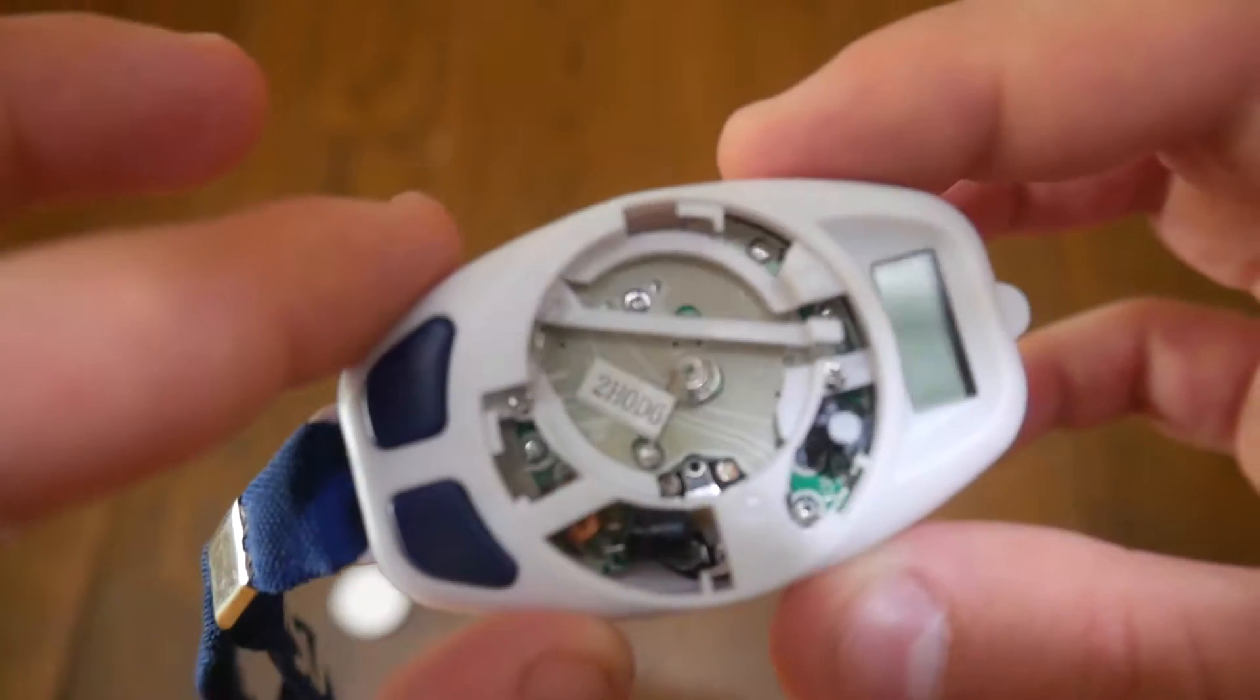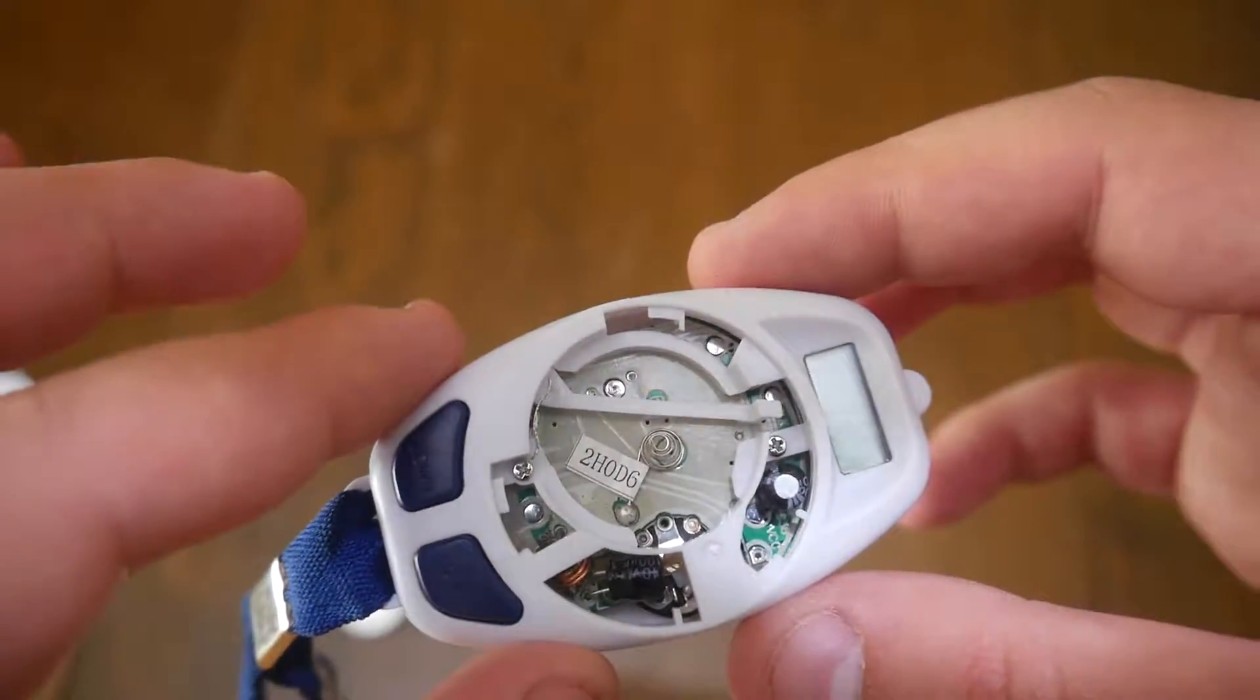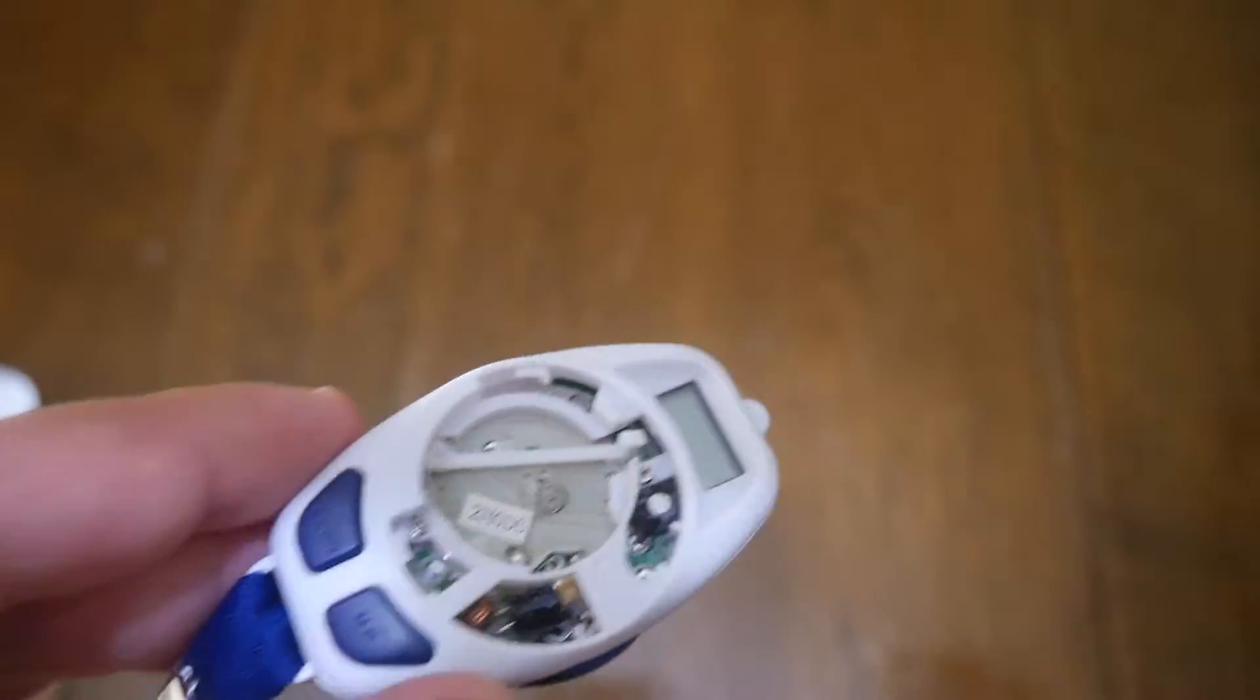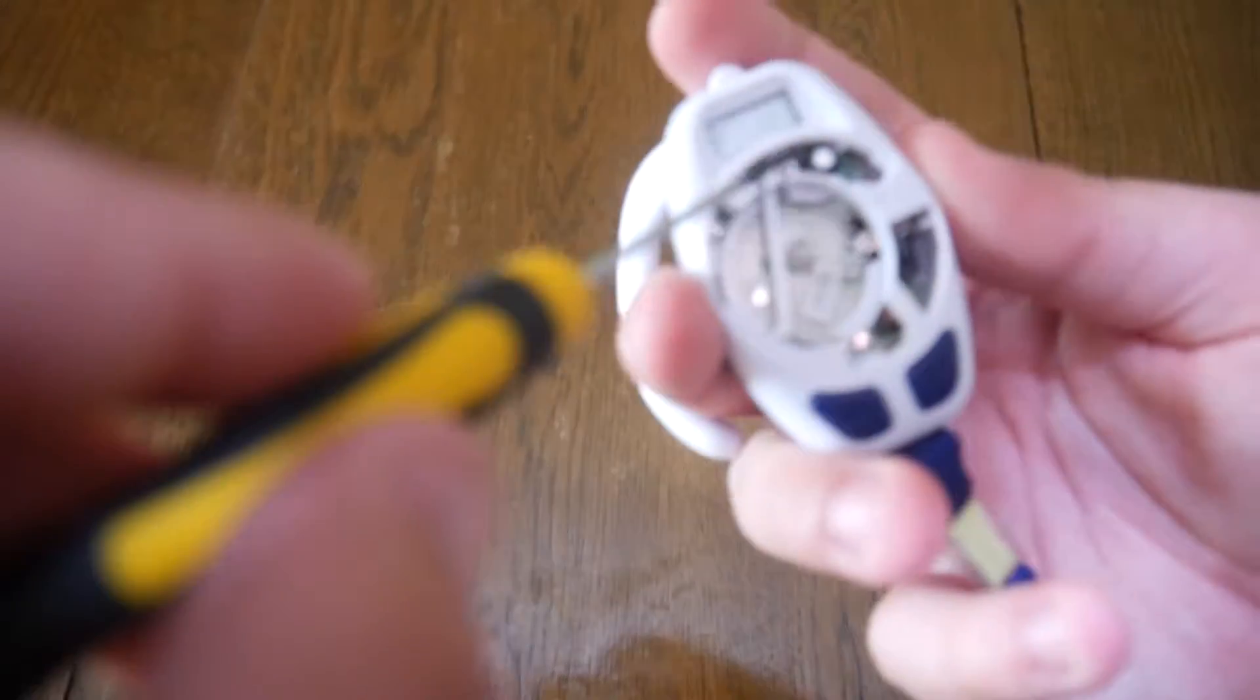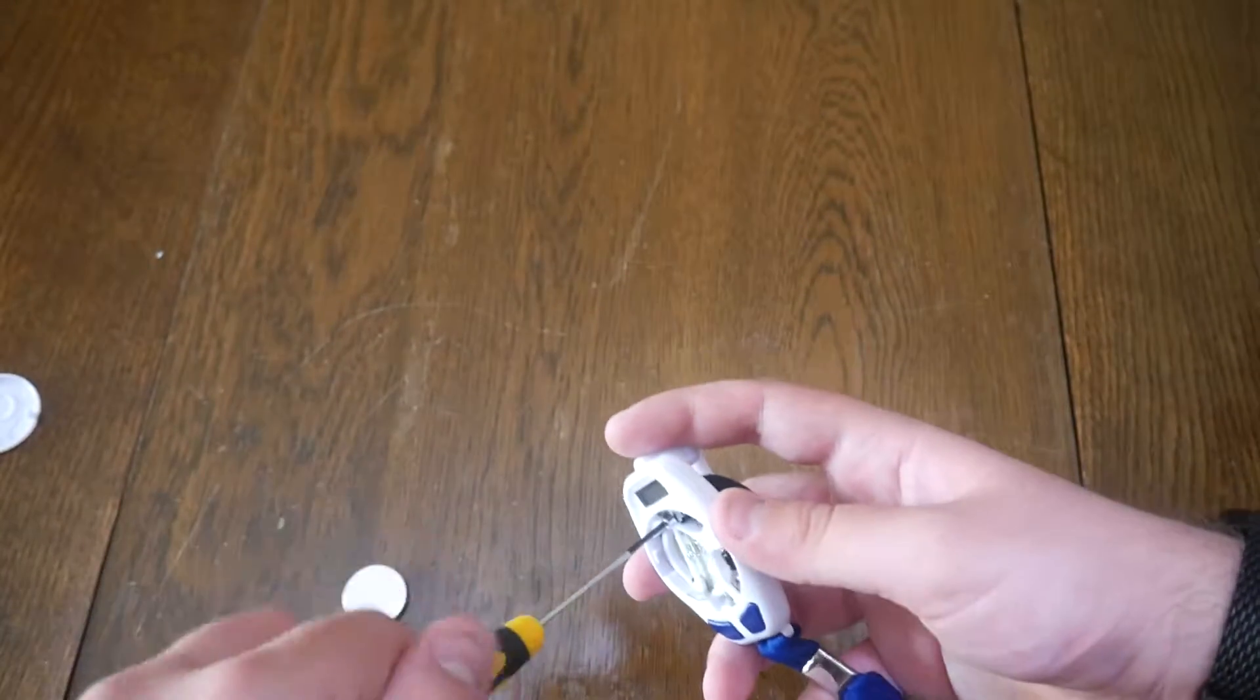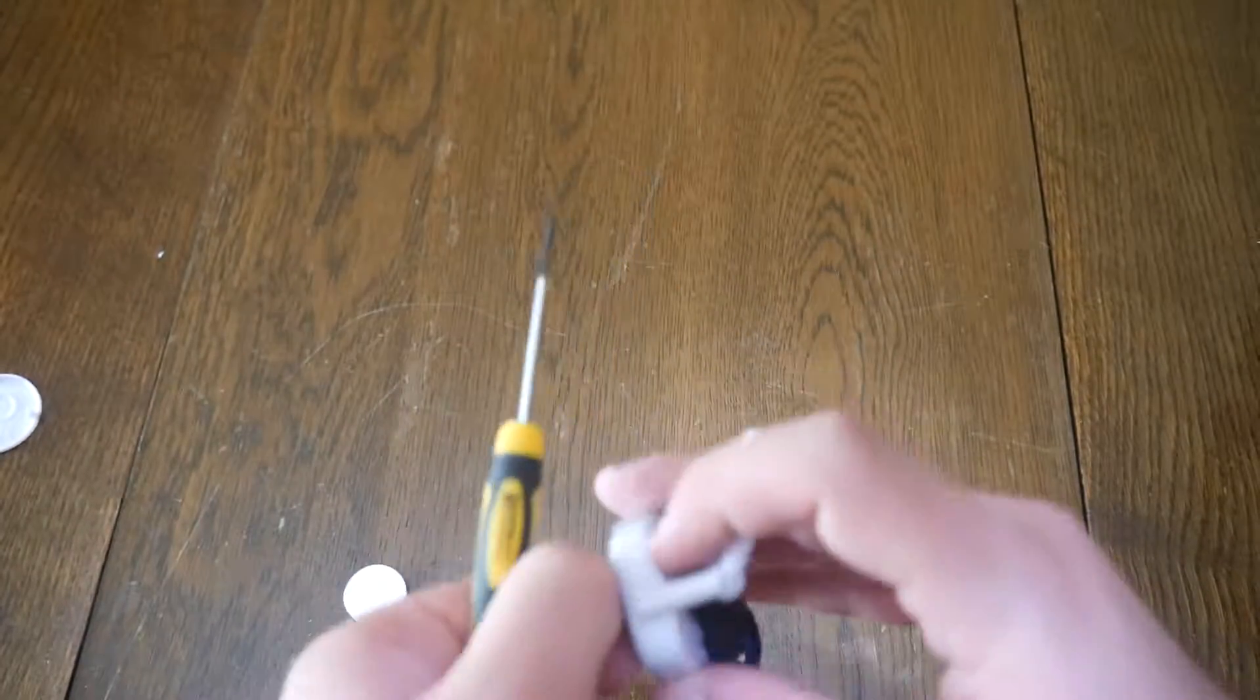I have my little screwdriver set. It's as simple as undoing those two screws. They're surprisingly long screws, I should mention. Look at the length of this screw—it goes the length of the whole earpiece.